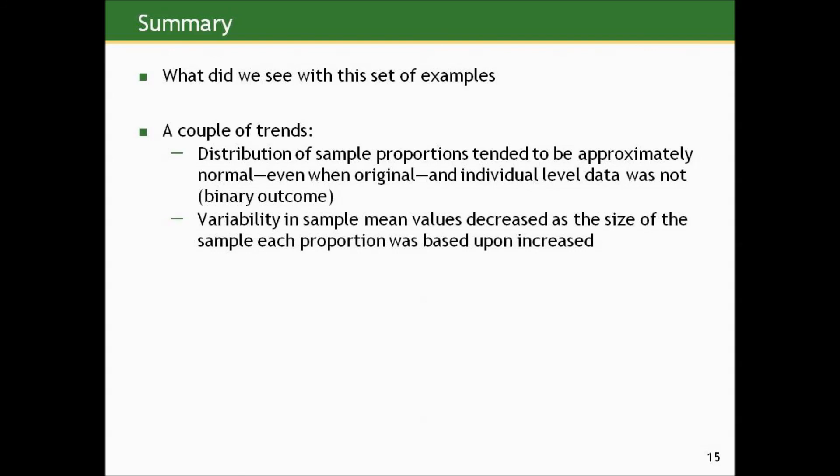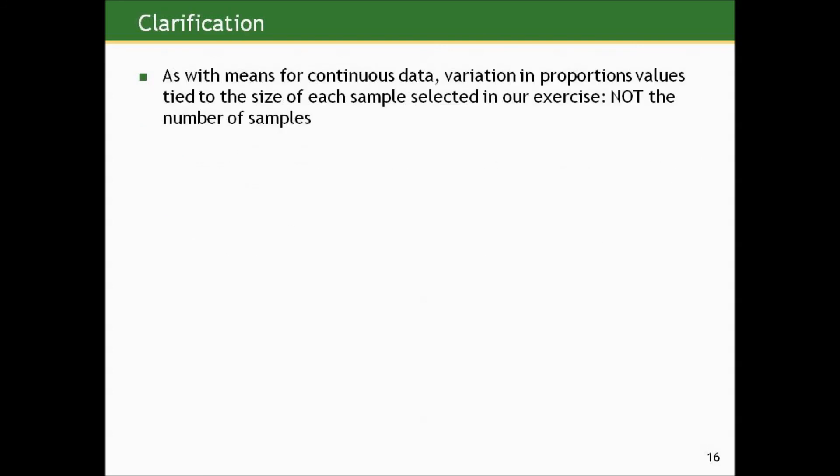And we saw that the variability in the sample proportion values decreased as the size of the sample each proportion was based on increased. And as with continuous data and means, the variation in our sample proportion values is tied to the size of each sample selected in the exercises, not to the number of samples. Number of samples was just arbitrary, and it was used to estimate the sampling distribution. But the number of samples itself does not impact the variability systematically.